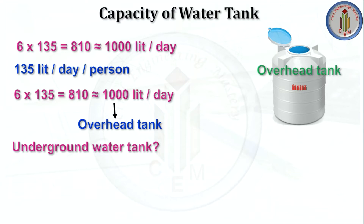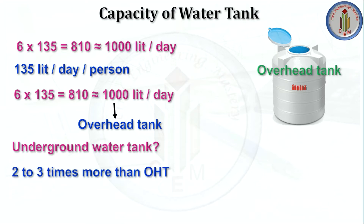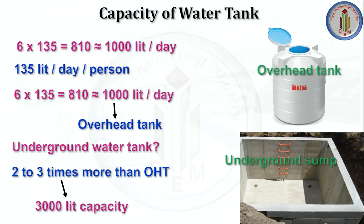In an underground sump, we always store water from a bore well, corporation water, or any other source. It is always good to have the underground water tank with two to three times more capacity than the overhead tank. If your bore well is under repair or you don't get corporation water properly, you will face water shortage. Since we require 1000 liters per day, two to three times that gives us a 3000-liter capacity underground sump.